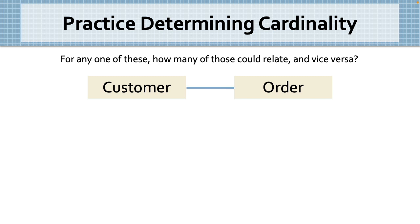For any one customer, how many orders could they place with us? One or many? Many, we hope. So, we draw in a crow's feet symbol on the order side of the relationship. Now, from the other side. For any one order, how many customers placed that order? One or many? Only one. So, we leave the straight line on the customer's side.